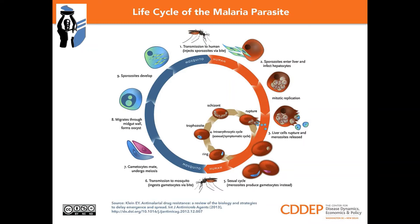From one sporozoite entering hepatocytes, 2,000 to 40,000 merozoites form. The liver cells are destroyed and the parasites enter the bloodstream and then enter into erythrocytes — the intra-erythrocyte cycle begins. In the erythrocyte, Plasmodium grows and divides by schizogony. The development of Plasmodium vivax, ovale, and falciparum occurs during 48 hours; Plasmodium malariae during 72 hours; and Plasmodium knowlesi during 24 hours. After that, erythrocytes are destroyed, and merozoites and parasite waste products enter the bloodstream.